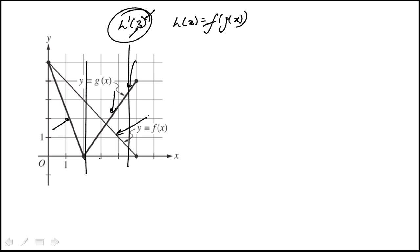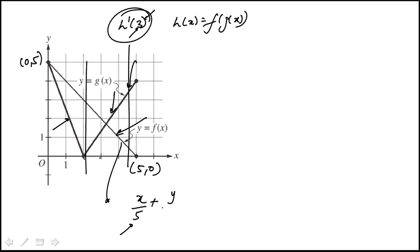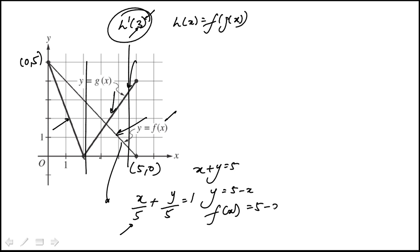We'll start with f first. The relevant points are (0, 5) and (5, 0). That's a straight line, and I'm going to use the intercept form: x over the x-intercept plus y over the y-intercept equals 1, which gives x over 5 plus y over 5 equals 1, so x plus y equals 5, meaning y equals 5 minus x. So the function f is 5 minus x.